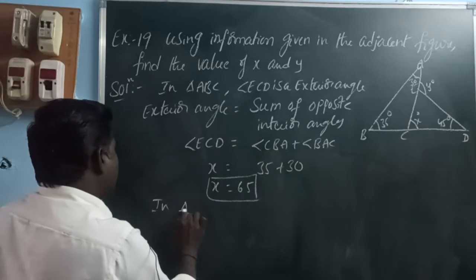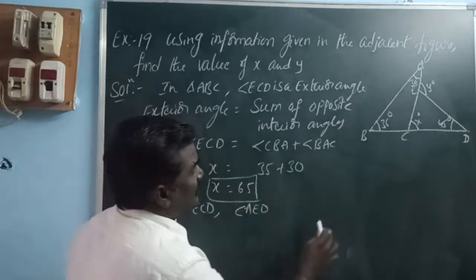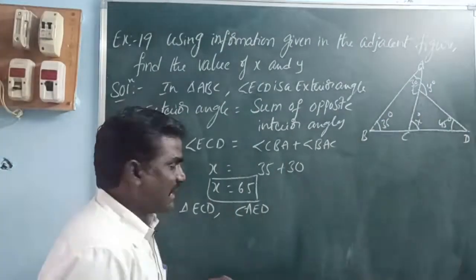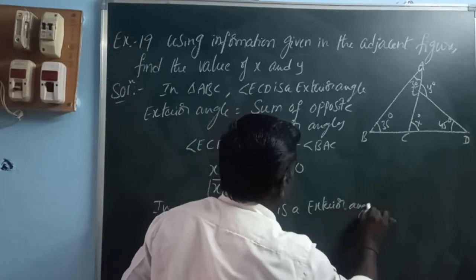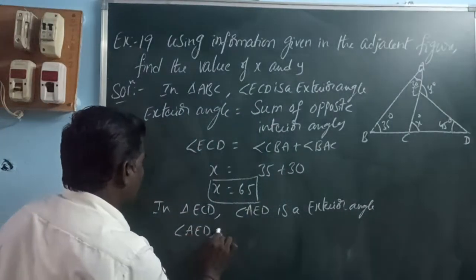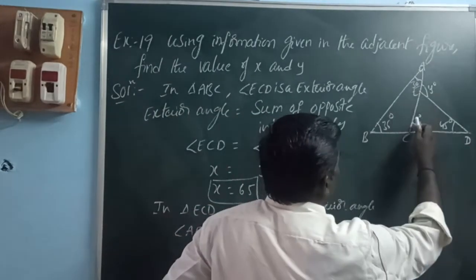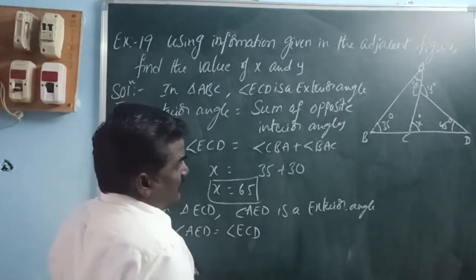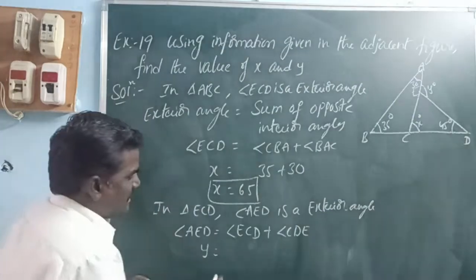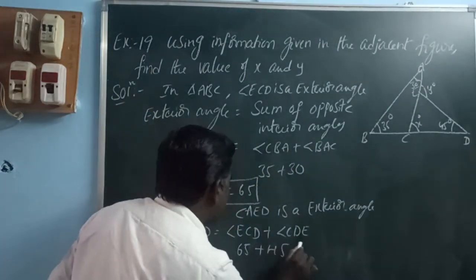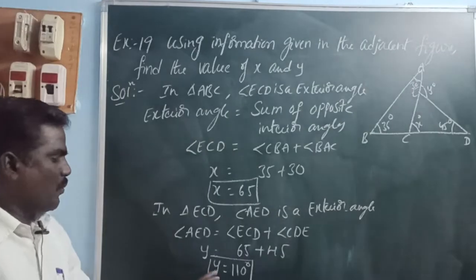Next, in triangle ECD, angle AED is an exterior angle. Using the exterior angle property: angle AED equals angle ECD plus angle CDE. So Y equals X plus 45, where X is 65. Therefore Y equals 65 plus 45, giving Y equal to 110 degrees. So X equals 65 and Y equals 110.